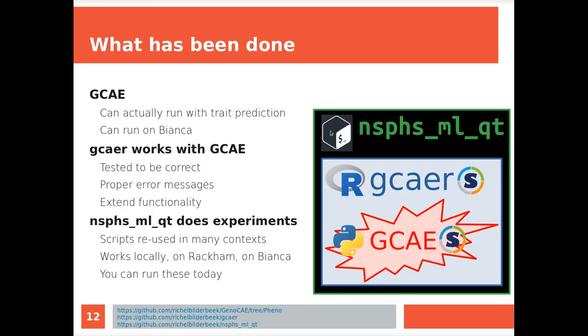So in that way intuitively I feel it makes sense, but we still don't know. So what has been done is, we have GCAE the autoencoder, there's an R package I made around it, and I made a collection of bash scripts around it. So GCAE can now actually run with trait prediction, that it could not run at the start, but I made it run and can now run on Bianca thanks to a singularity container I made.